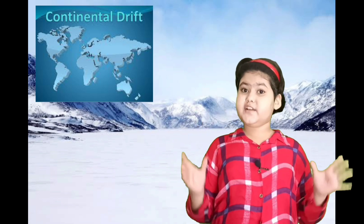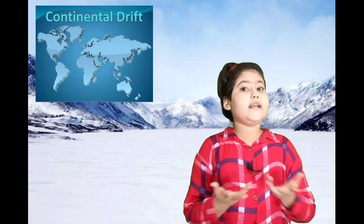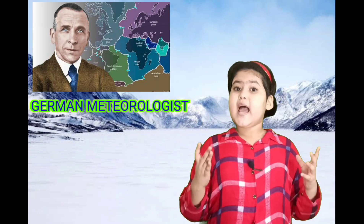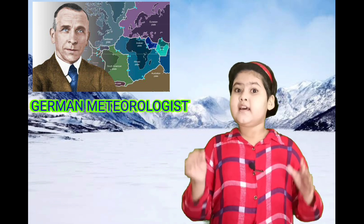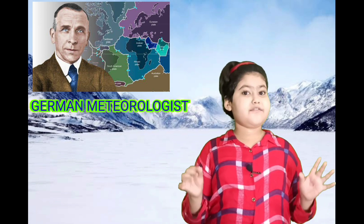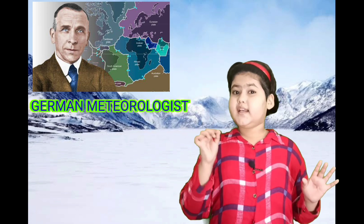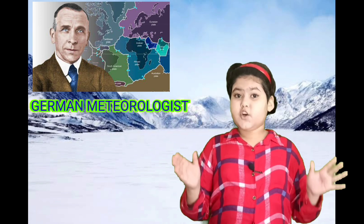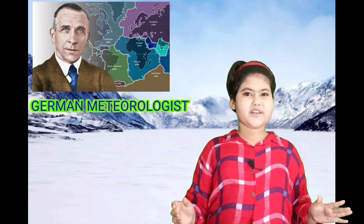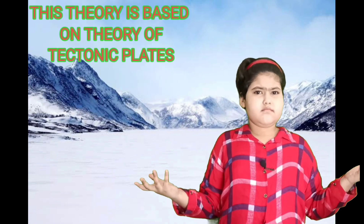Our first theory is Continental Drift Theory. Do you know who invented this theory? This theory was given by Alfred Wagner in 1912. Alfred Wagner was a German meteorologist. Now, Continental Drift Theory is based on what?